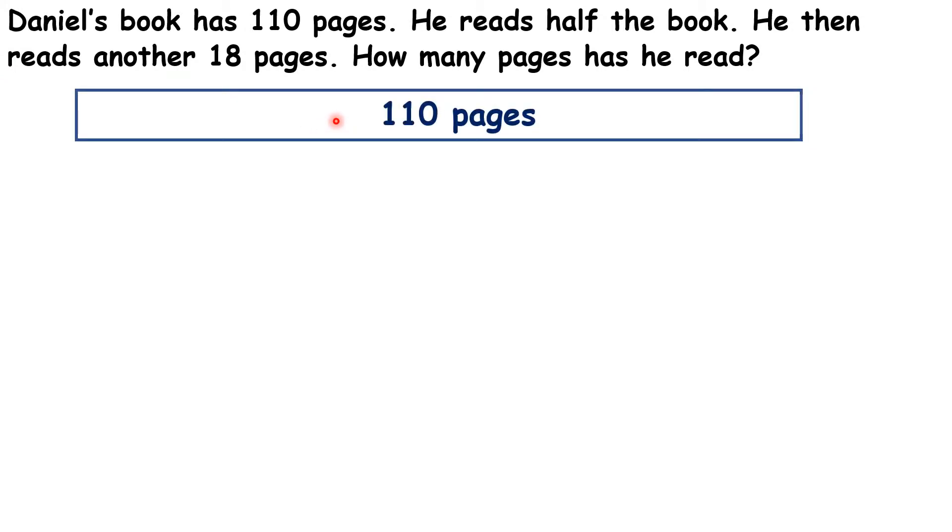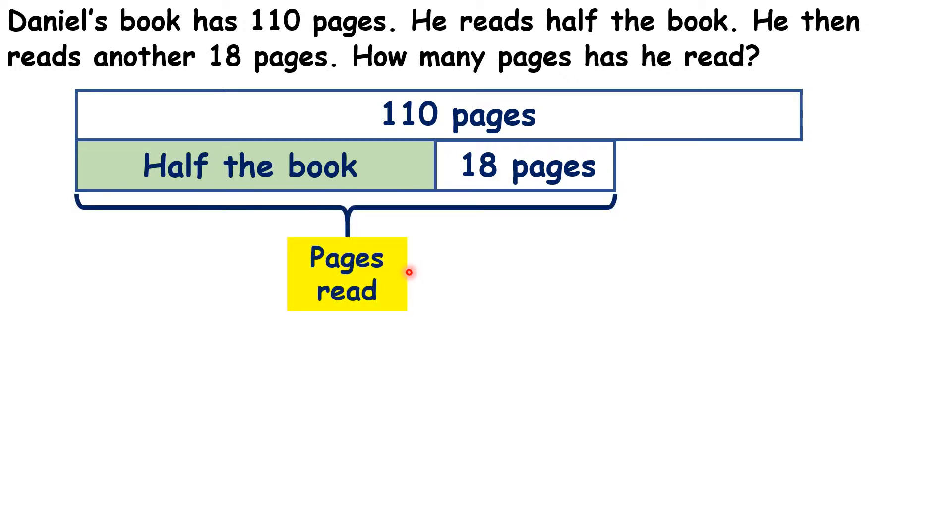So we know that there are 110 pages in the book. He reads half the book and then reads another 18 pages. We need to work out how many pages he has read all together.